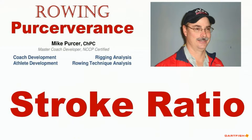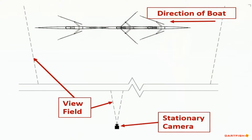Stroke ratio is a measure of the rhythm of the crew's rowing. It is the result of the time the crew spends on the recovery part of the stroke divided by the crew's drive time.